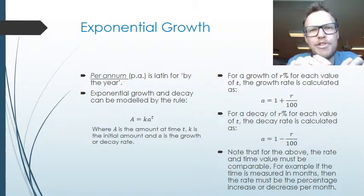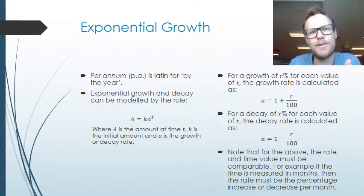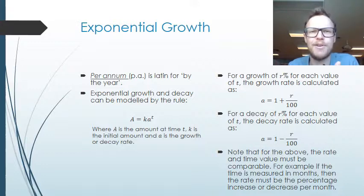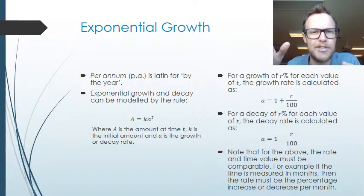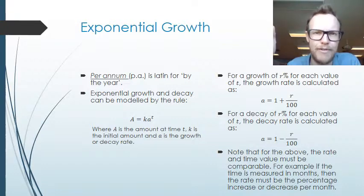So we go one, two, four, eight, 16, 32 — and that happens at a regular time interval. Say every 20 minutes a bacterium might divide. We see that the actual population of bacteria grows exponentially because it doubles each time, so it's two to the power of whatever time period we're talking about.